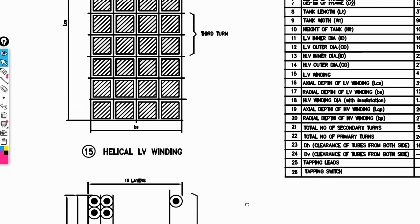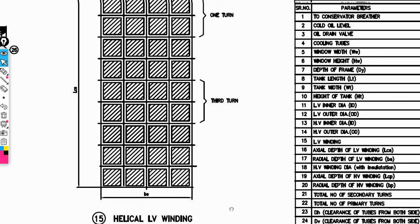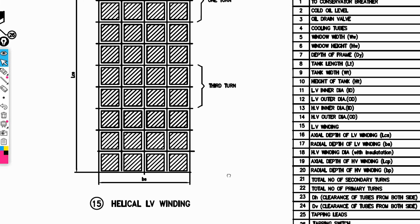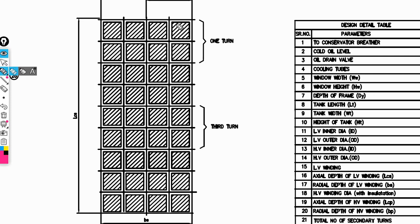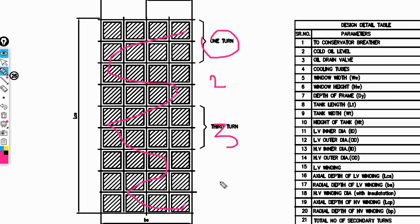This is the type of three-phase core-type transformer. This is the helical low-voltage winding — we can see what the winding looks like here: it looks like a helical winding. The first turn, second turn, third turn, and fourth turn are important points. This is the low-voltage winding, with LCS denoting its axial depth.